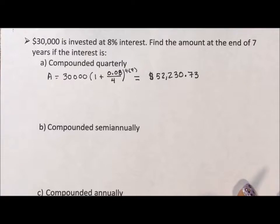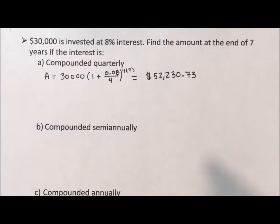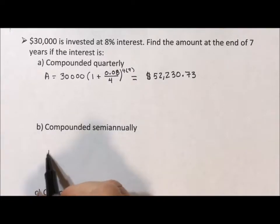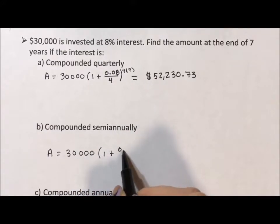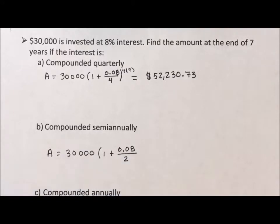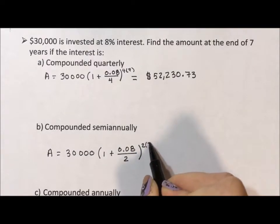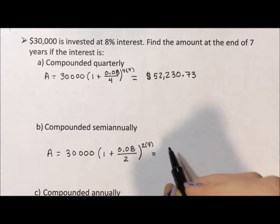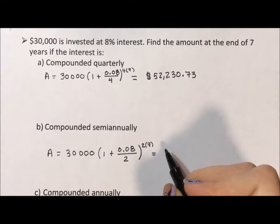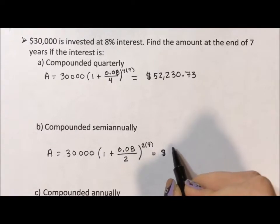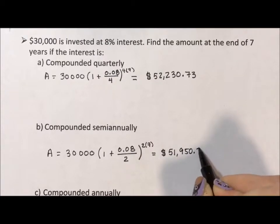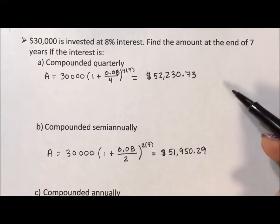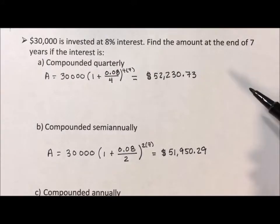Now let's see what happens if we have our interest applied just a little bit less — so instead of quarterly, semi-annually, which is twice a year. Most of the equation stays the same: we're still starting with $30,000, still at 8%, but this time it's getting split up twice, so 4% every six months. That means it happens twice a year for seven years, or 14 applications total. With half as many compounding periods, instead of $52,000 we get $51,950.29. It doesn't seem like a big difference, but it is — it's more money when it's compounded more often.